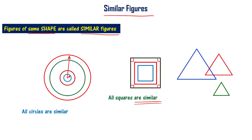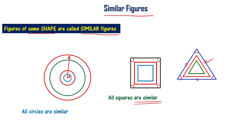Now let us look at equilateral triangles. In an equilateral triangle, all angles are 60 degrees and all sides are of equal length — each side is equal to the other. Since the shape of equilateral triangles is always the same, all equilateral triangles are similar.